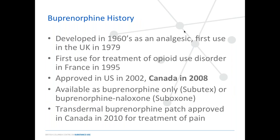Some history: buprenorphine was developed in the 1960s as an analgesic. Keep in mind that a lot of people have doubts about its value as a pain medication, but it's an opioid that was developed strictly for analgesic purposes. It was first used in the UK in 1979, then in France in 1995 there was real uptake for the treatment of opioid use disorder, and they saw a significant decrease in overdoses. It was subsequently approved in the US in 2002 and Canada in 2008.